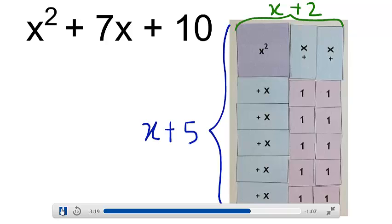Can you write the area of this rectangle as a product of its sides? So, the area is nothing but (x plus 5) times (x plus 2).